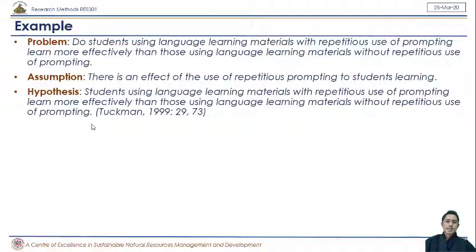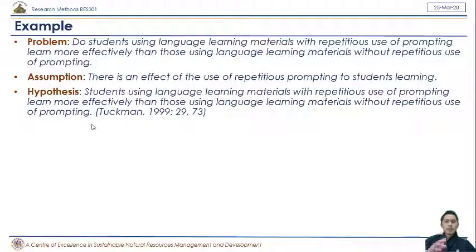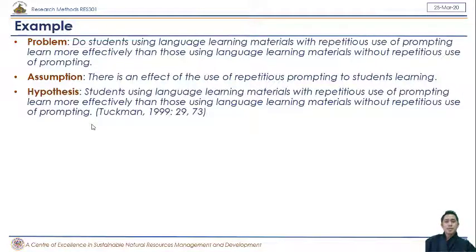From these examples, assumption is basically believing in some statements or principles without having very concrete evidence or without having that principle statistically tested. Hypothesis is that same statement given in assumption, but we are pointing at one particular direction which can be statistically tested.